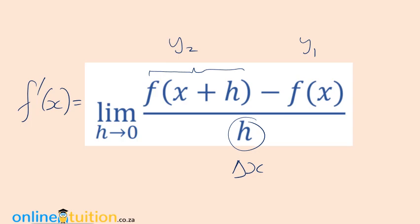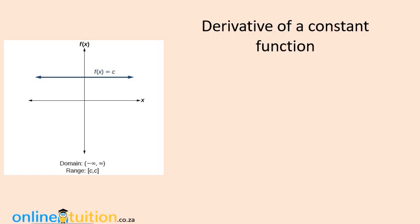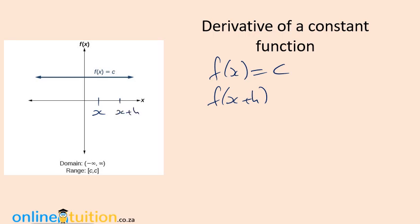For the first example, we look at f(x) = c, where c is a positive constant. Looking at the graph, it's horizontal — it's pretty obvious the slope is zero. Let's use our definition of the gradient and show that it is indeed zero. We're given f(x) = c, and we need f(x+h). If x is a point and x+h is a neighboring point, notice that f(x) is c and f(x+h) is also c — the function is constant.